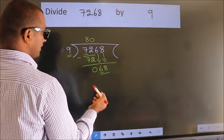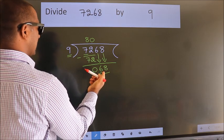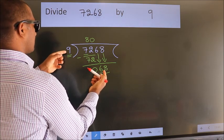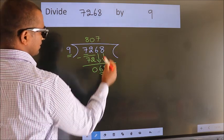So, 68. A number close to 68 in the 9 table is 9 times 7, which is 63.